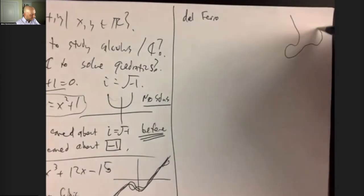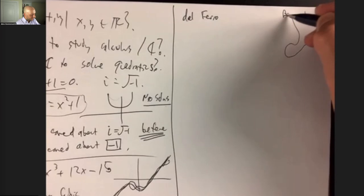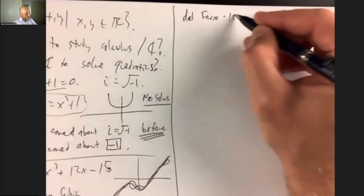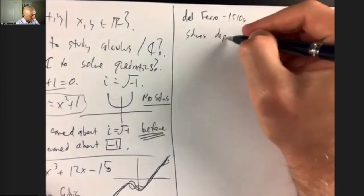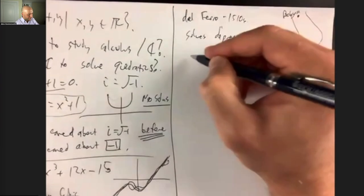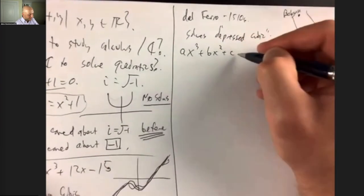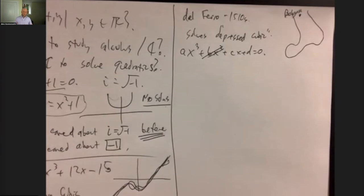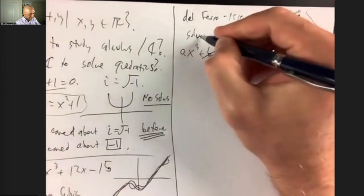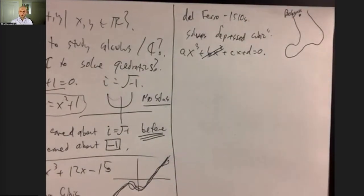Let me make a cartoon — this is Italy, Del Ferro is in Bologna. In the 1510s, Del Ferro figures out how to solve a depressed cubic. A general cubic is ax³ + bx² + cx + d; a depressed cubic has no quadratic term. If he had negative numbers, he could have immediately solved the general case, but he didn't. The state of algebra at this time was quite poor.